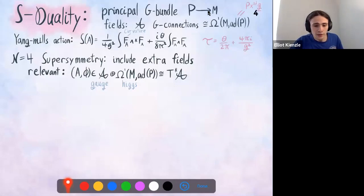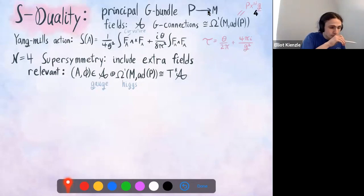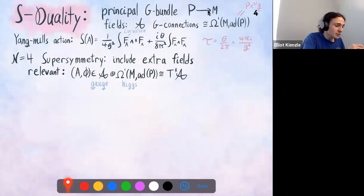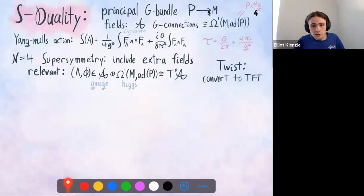Now we take N=4 supersymmetry. Sid did this by taking N=1 supersymmetry on 10D space and then dimensionally reducing. The effect is we introduce a bunch of extra fields and symmetries. The one that's relevant to us is the field φ, which we'll call the Higgs field, and it takes values in adjoint-valued one-forms. The space of fields we care about is gauge fields and Higgs fields, and since this is a vector space based on the same object, we can identify it with the cotangent bundle of the space of connections.